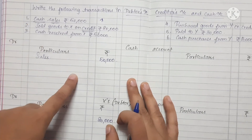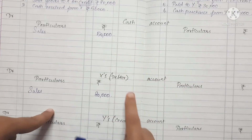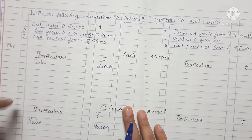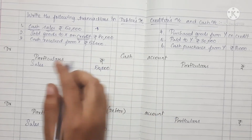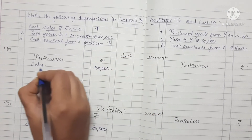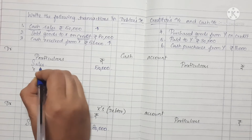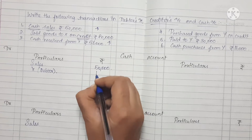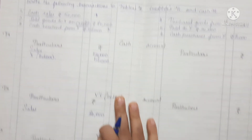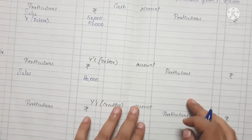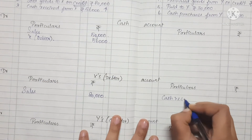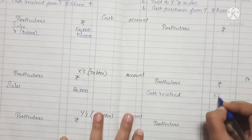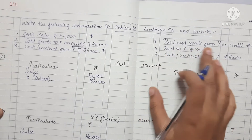When we receive cash, we go to the Cash account. Cash received from X: the amount is Rs. 56,000. When we receive the cash, the asset value increases. The amount received is Rs. 56,000 and it is entered on the Debit side of the Cash account.